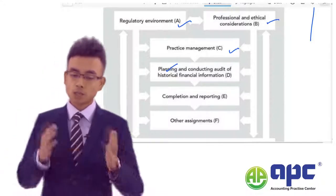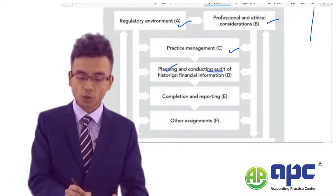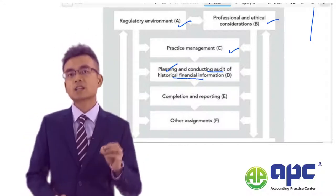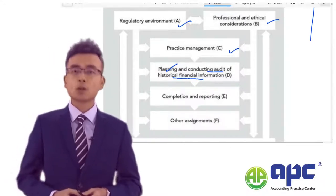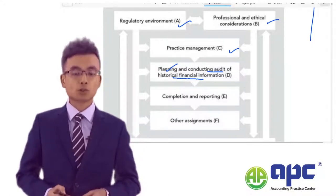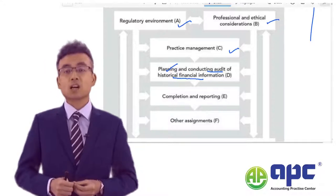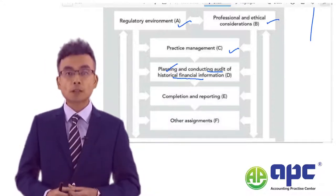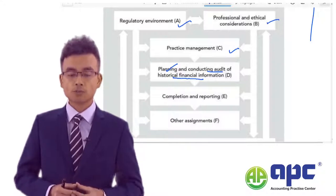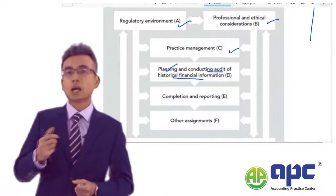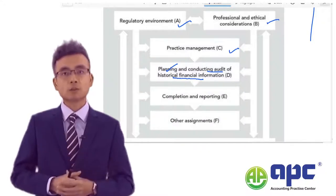The second part of the Part D syllabus covers conducting the audit of historical financial information. Mainly, we apply IFRS — International Financial Reporting Standards — learned from SBR, or Strategic Business Reporting. You will encounter questions like the audit of deferred tax assets, employee benefits, share-based payment, financial instruments, and so on. The examiner typically awards one mark per point for substantive procedures at this level.